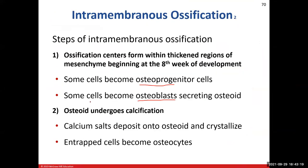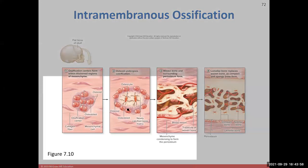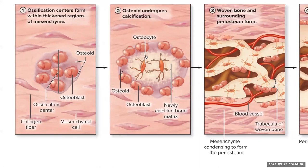Step two: the osteoid undergoes calcification as calcium salts deposit around the collagen fibers, causing hardening. Osteoblasts trapped in the hardened matrix convert into osteocytes, which maintain the bone matrix. Other osteoblasts continue secreting osteoid, perpetuating the process.